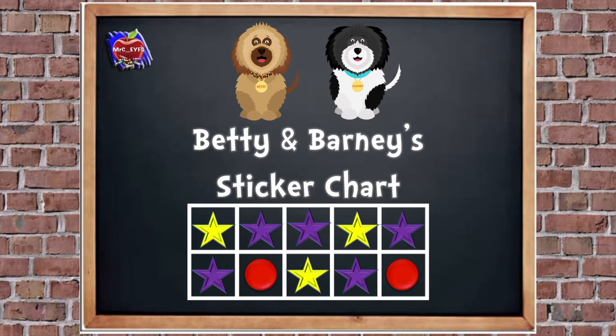Betty and Barney like to have treats when they're at home, but they need to earn them for good behaviour. So this is their sticker chart. Do you have a sticker chart at home? If you're doing lots of jobs, you might do some cleaning. You might do your homework. They've got some yellow stars. They've got some purple stars. And they've got some red circles. So that's all their stickers they've earned. And their sticker chart, what does it look like? Have you seen something like this before?